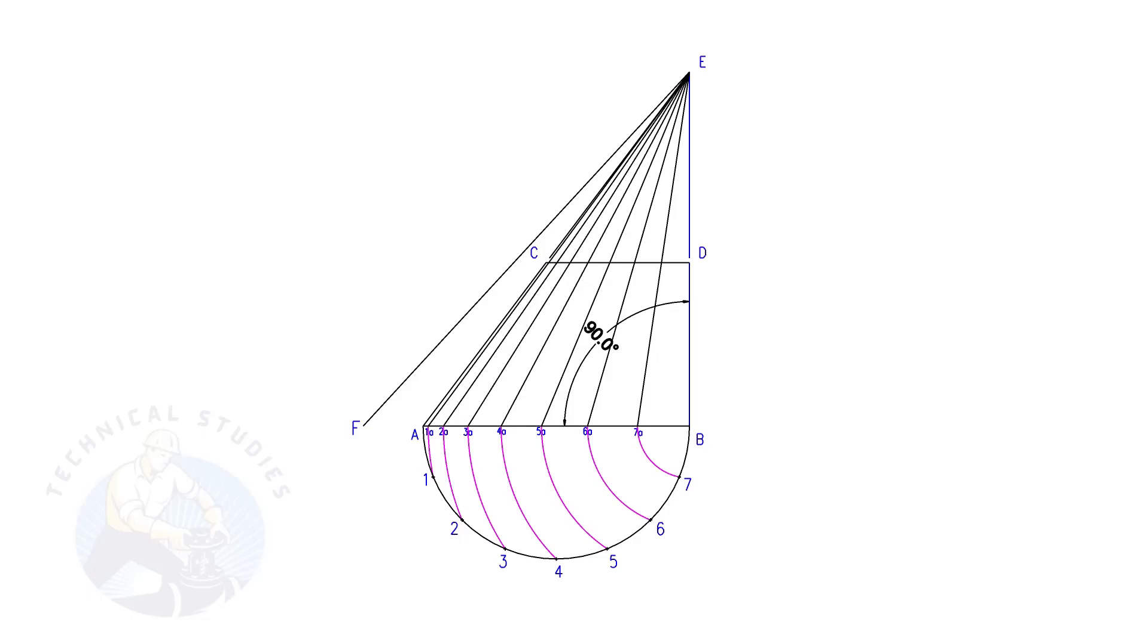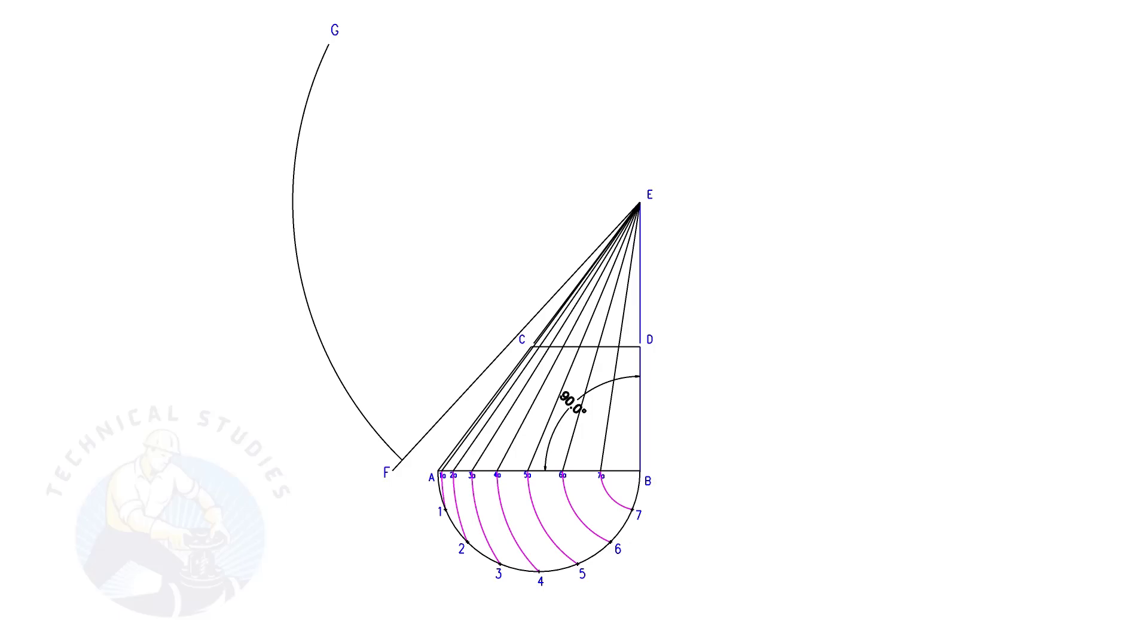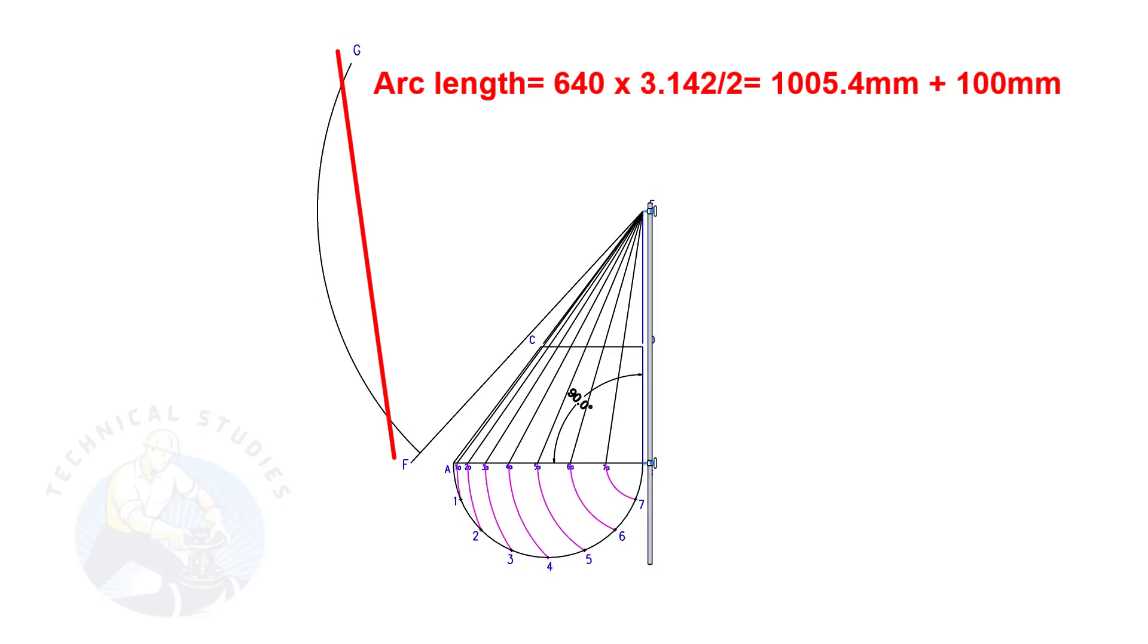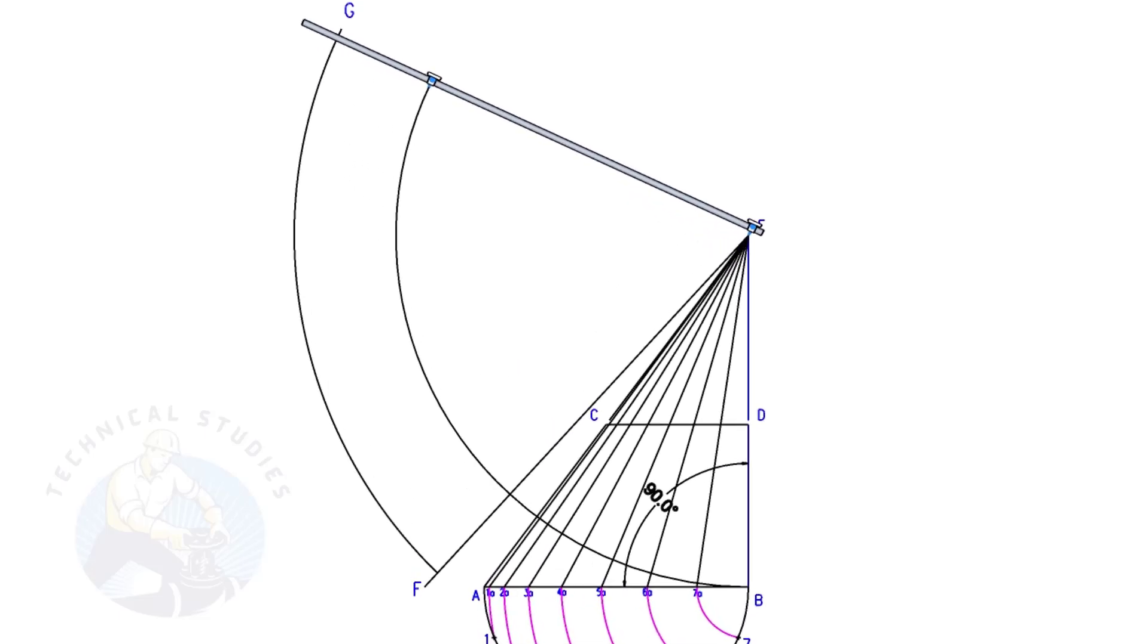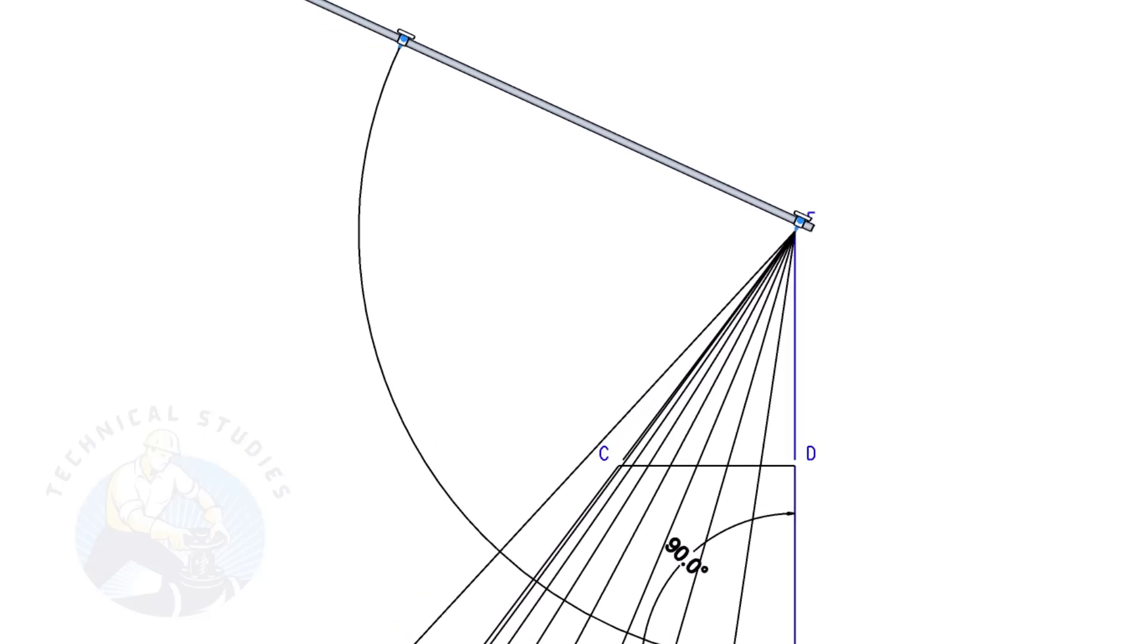Draw arc FG. The length shall be a little more than the half circumference of the bottom diameter. Again, this arc is only for a reference of the half circumference length. Draw arcs EB, E7A, E7B, etc.